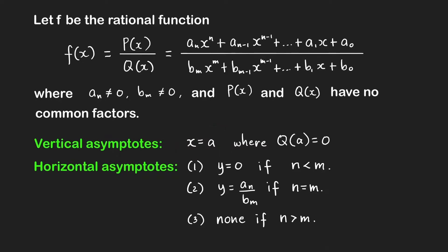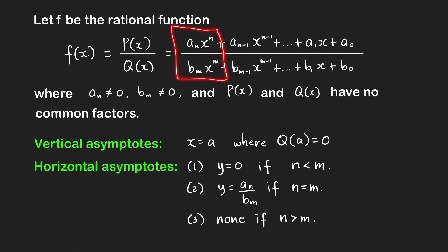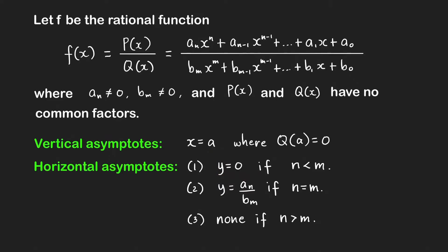For horizontal asymptotes, we look at the leading terms of the two polynomials p of x and q of x — the terms with the highest power of x. If the highest power of x in the numerator, which is n, is less than the highest power of x in the denominator, which is m, then we conclude that the x-axis, or the line y equals zero, is a horizontal asymptote of f. Note that n is the degree of polynomial p, and m is the degree of polynomial q.